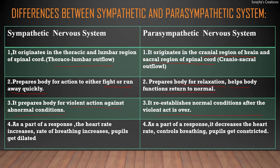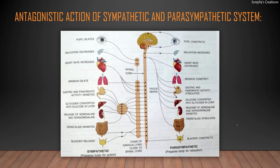As part of the sympathetic response, heart rate increases, rate of breathing increases, and pupils get dilated. As part of the parasympathetic response, heart rate decreases, breathing is controlled, and pupils get constricted. This is the antagonistic action of sympathetic and parasympathetic systems — the actions are opposite to each other. Whatever functions are carried out by the sympathetic system, the opposite function is carried out by the parasympathetic system.